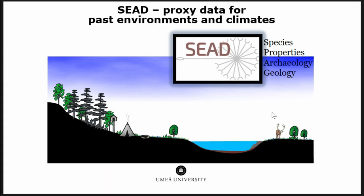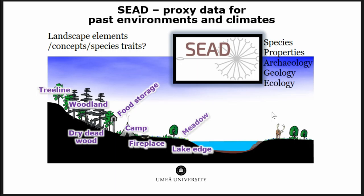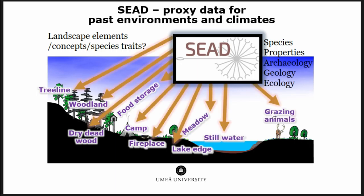We have a database, and lots of people have databases — but the question is how do we get back to reconstructing landscapes? What are the implications for linking data through these environmental concepts, elements, or traits to other data sources? A lot of this is done through mapping our paleo-ecological data or elements to modern ecology data.